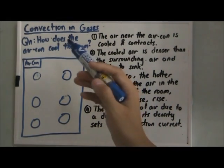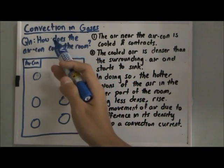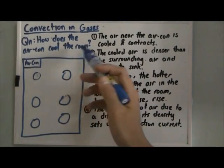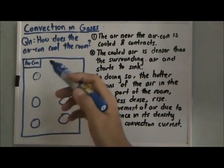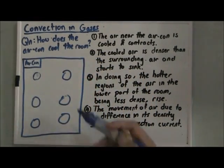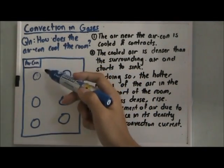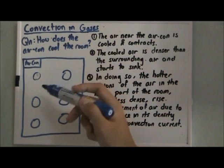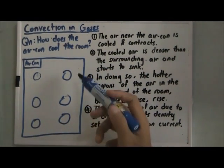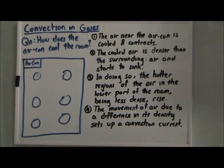Now let's look at this question: How does the aircon cool the room? This diagram shows an aircon that is fixed at the top of the room, and these six circles here represent the air at six different parts of the room.